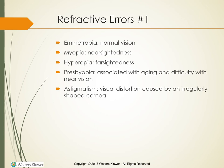Myopia is nearsightedness; people who are myopic hold things close to their eyes to see them well. Hyperopia is farsightedness; people who are hyperopic see objects far away better than objects that are close. Presbyopia is associated with aging and results in difficulty with near vision; people with presbyopia should hold reading material at a distance to see it more clearly. Astigmatism is visual distortion caused by an irregularly shaped cornea. Many people have both astigmatism and myopia or hyperopia.